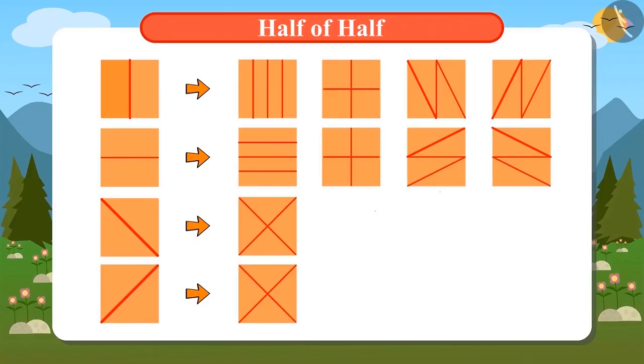See, Daddy. I have divided this field into four equal parts in these ways. Tell me, are these all correct?